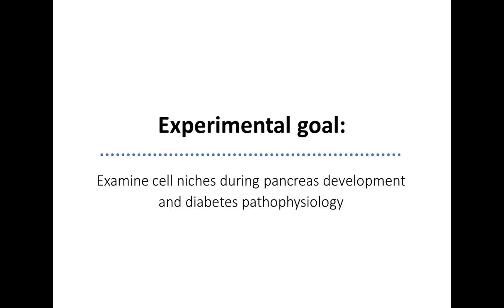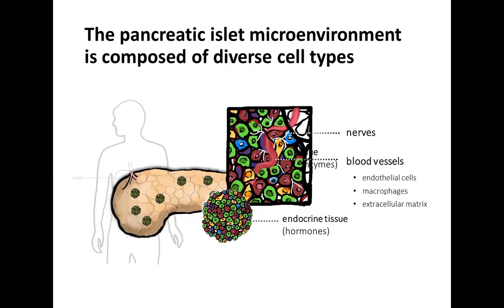In the Powers and Bersova Research Group, we're particularly interested in understanding cellular niches during pancreatic development and in the context of disease pathophysiology. The pancreatic islet microenvironment is composed of diverse cell types. The pancreas is a bifunctional organ composed of two compartments — exocrine and endocrine. The exocrine compartment makes up about 98% of the mass and consists of acinar cells that secrete digestive enzymes into a ductal network that empties into the duodenum.